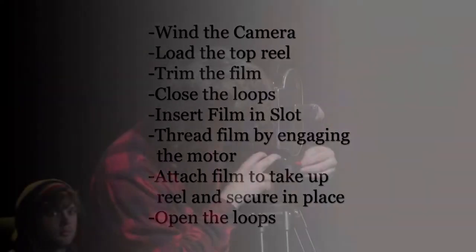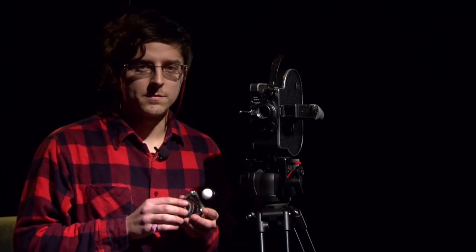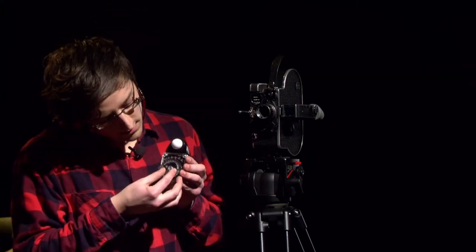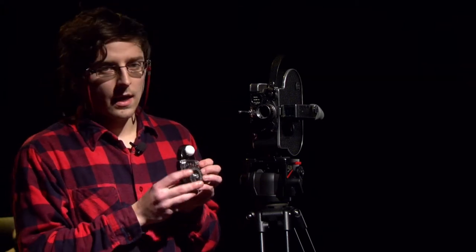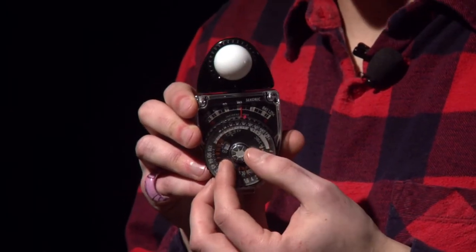Now, we are going to actually capture an image using the film that we have just loaded. First, you need to check your light meter. Earlier I was talking about the film stock speed and that is important now because we are going to take this speed and use the inner dial to set it to 200, which is our indoor speed.